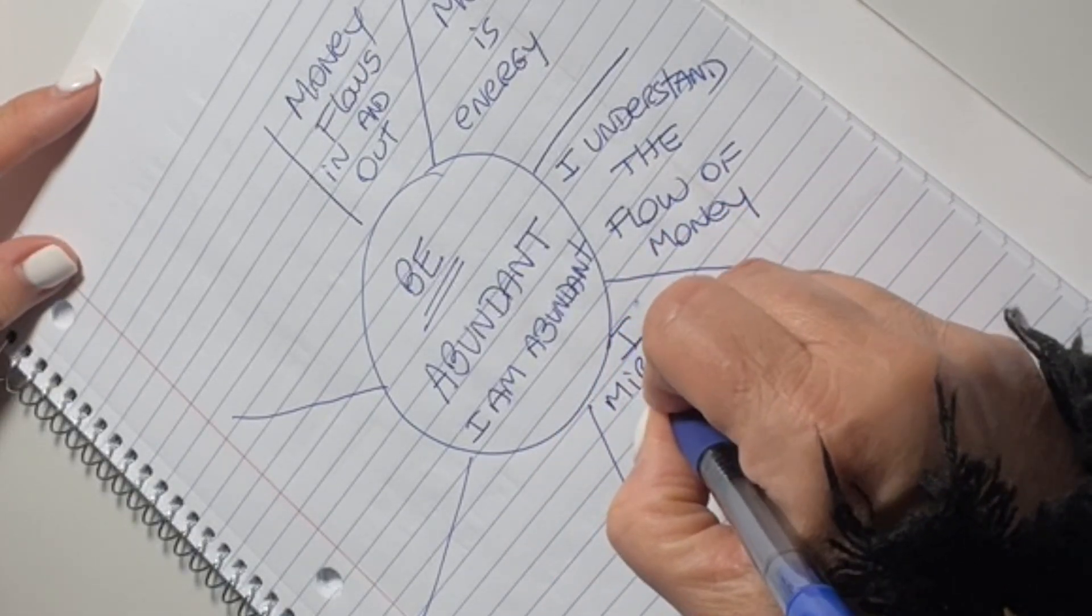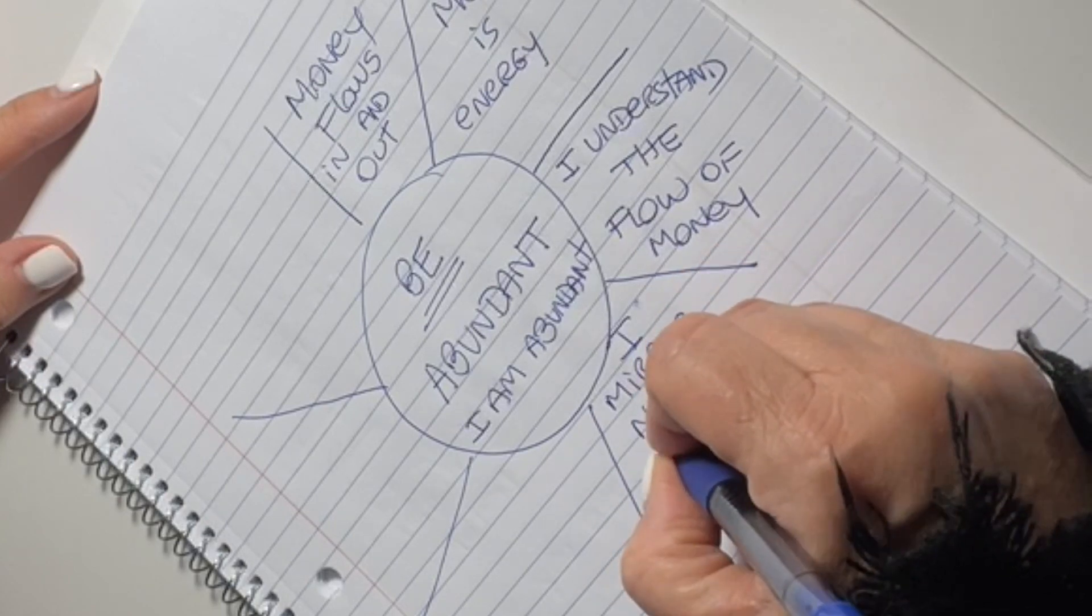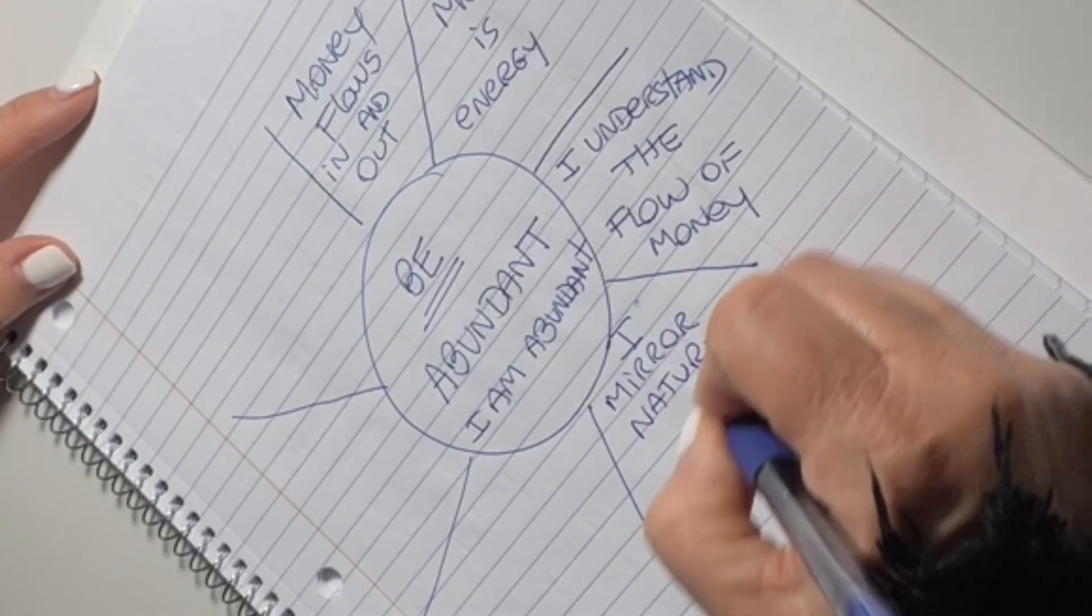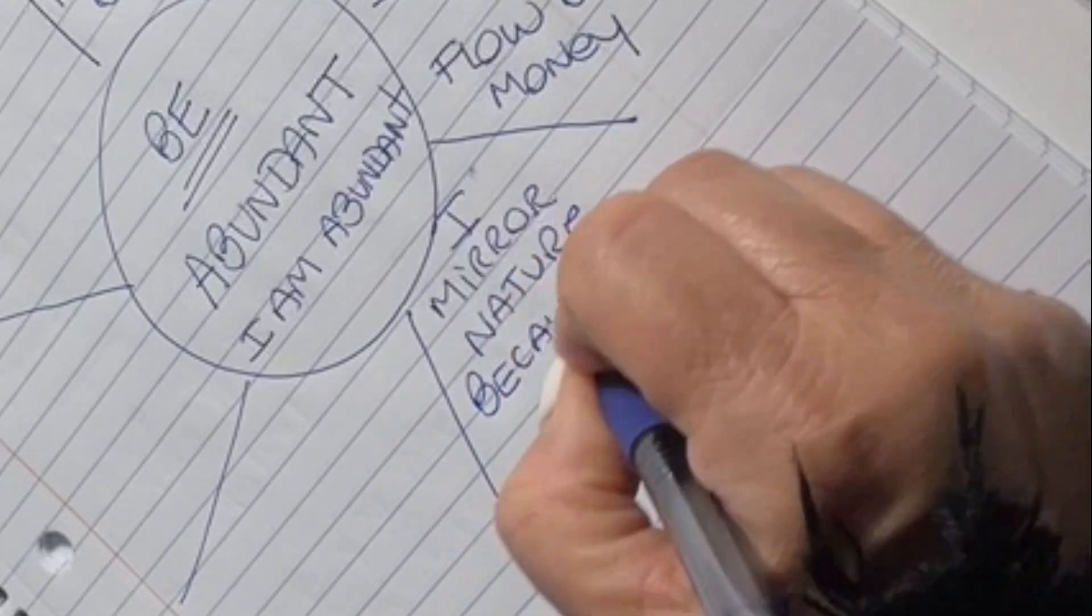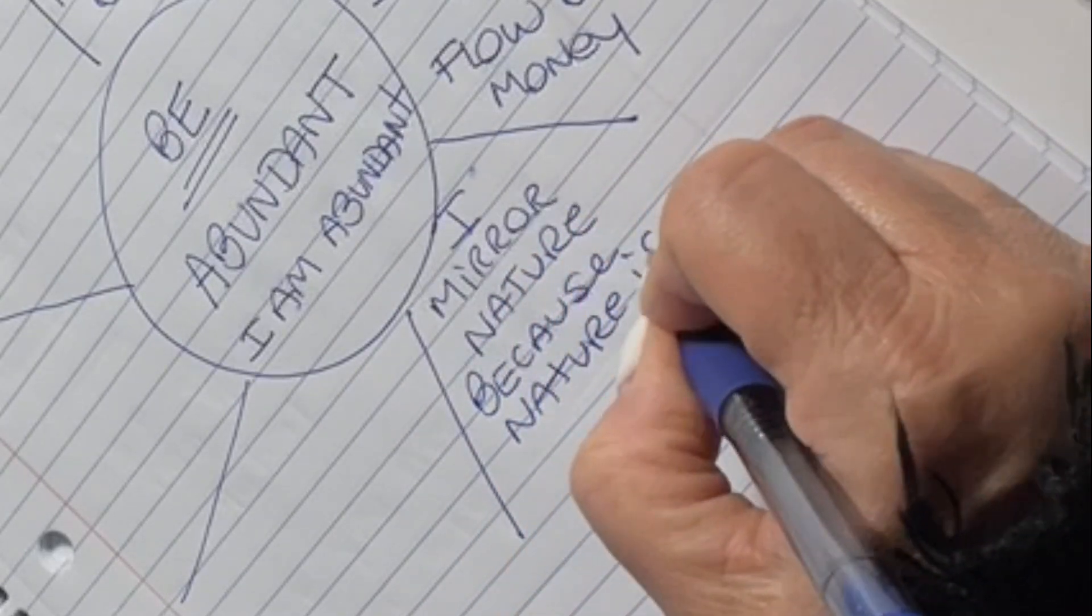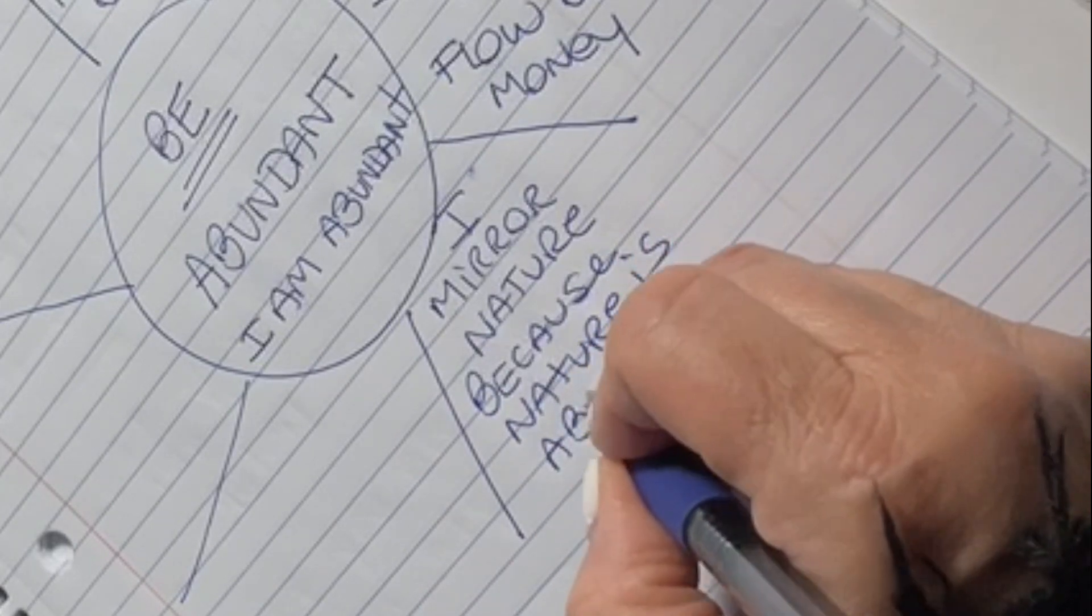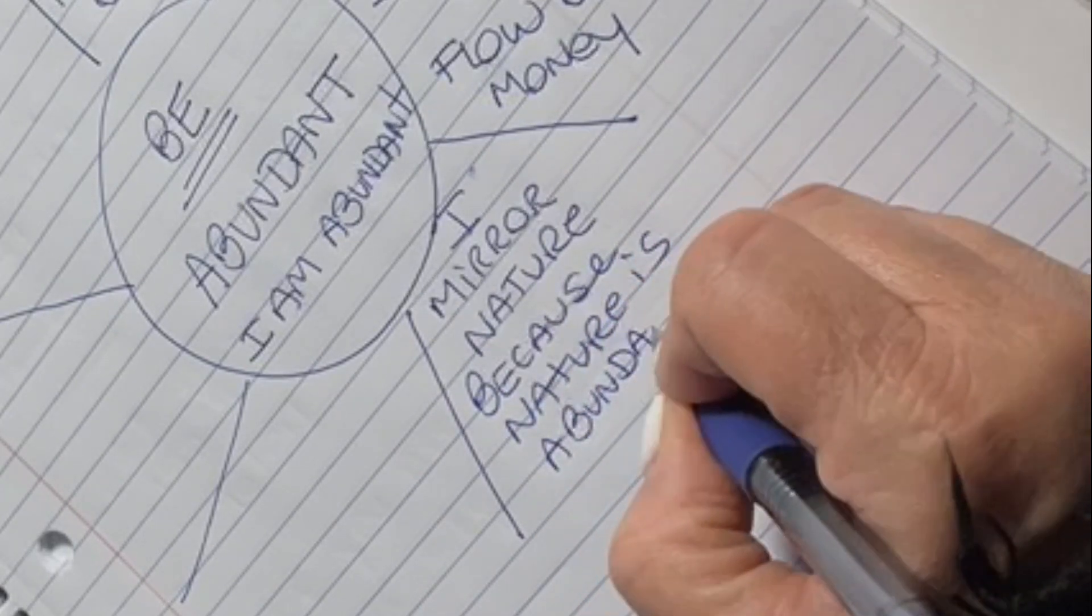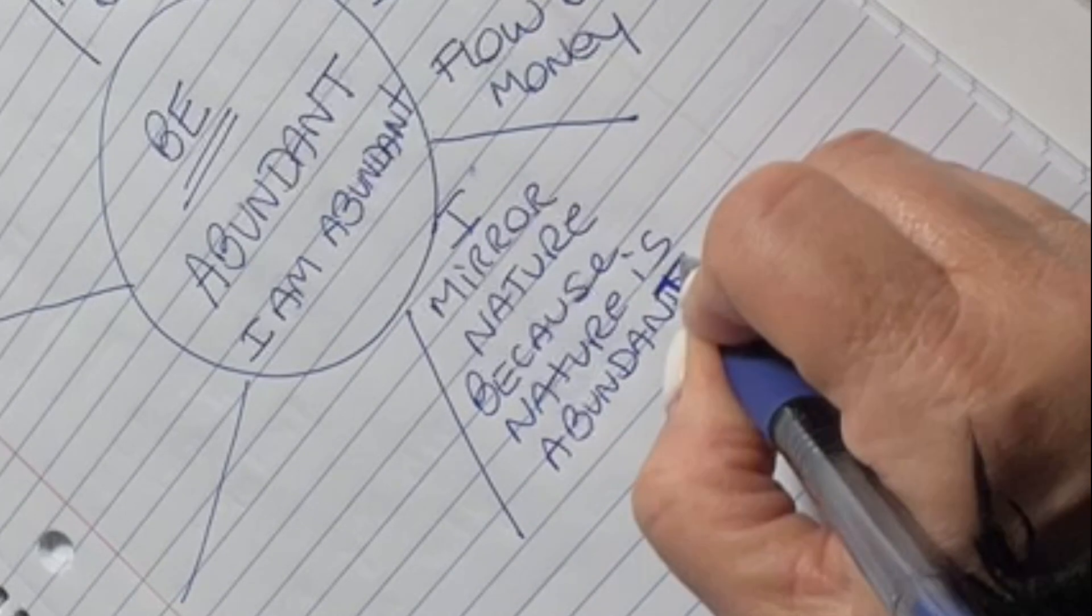I mirror nature because nature is abundant. Go look at an apple tree or the leaves that fall from trees during the autumn season. There's so much water in the world. There's so much abundance in the world.